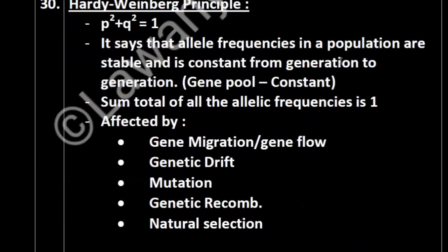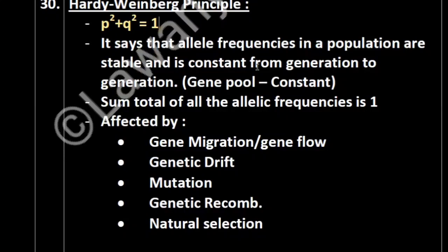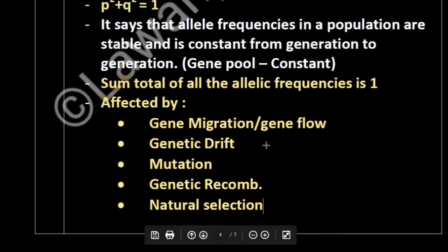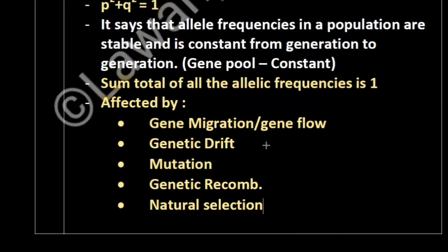Now let's come to the Hardy-Weinberg principle. The equation p² + 2pq + q² = 1 should be remembered well. It says that allele frequencies in a population are stable and constant from generation to generation — the gene pool remains constant. The sum total of all allele frequencies is 1. The Hardy-Weinberg principle is affected by: gene migration (gene flow), genetic drift, mutation, genetic recombination, and natural selection.